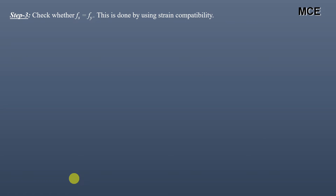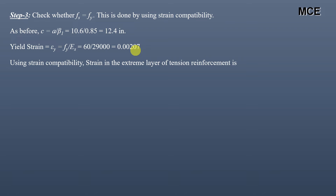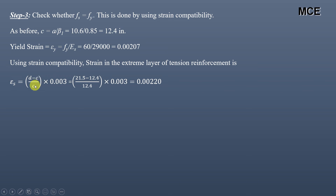The next step is to check whether the tension steel is yielding, using strain compatibility. The depth of the neutral axis c = a/β₁ = 10.6/0.85 = 12.4 inches. The yield strain εy = fy/Es = 60/29,000 = 0.00207. Using strain compatibility, the strain in the extreme layer of tension reinforcement equals (d − c)/c × 0.003. Substituting d and c gives a strain of 0.00220.